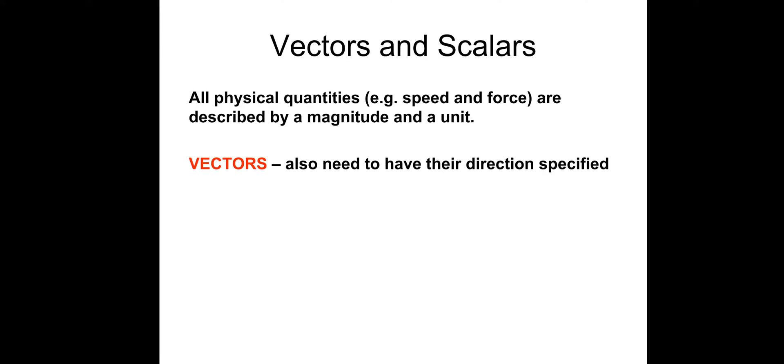So vectors and scalars. All physical quantities, two examples might be speed and force, are described by a magnitude and a unit. A magnitude is just a posh word for size. Vectors must also have direction specified. That's the difference. Some examples are displacement, velocity, acceleration and force.